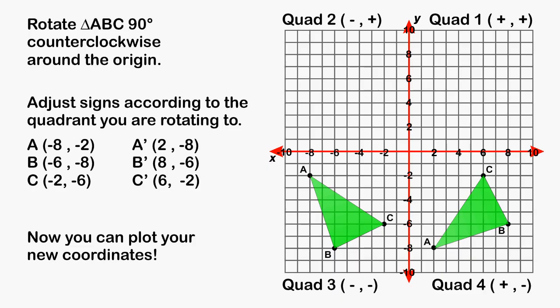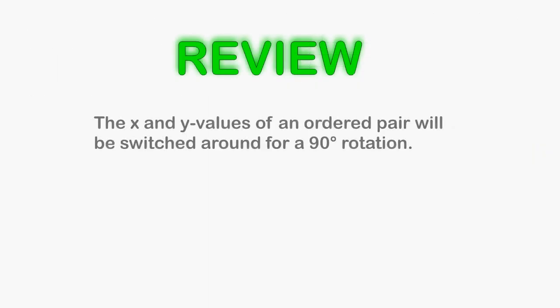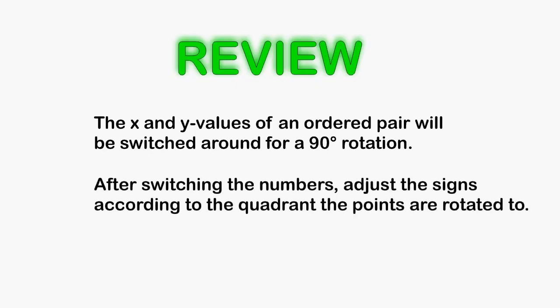So when performing any 90 degree rotation, start by switching around the x and the y values of the ordered pair. After you switch around the x and the y values, you have to change the signs according to the quadrant that you are going to end up in.